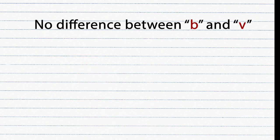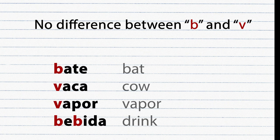In Spanish there is no difference between the letter B and the letter V. For example: Bate, Vapor, Bebida — both letters are pronounced the same way.